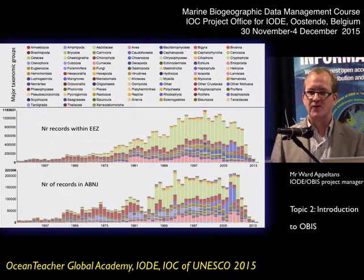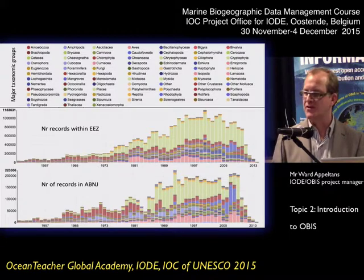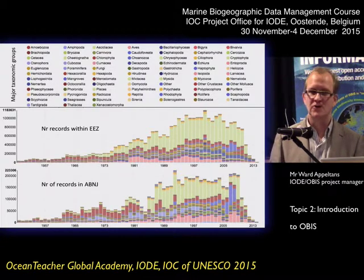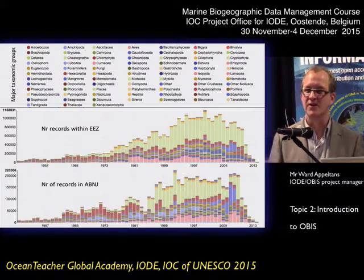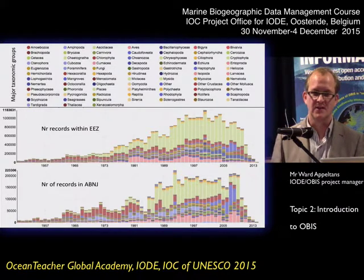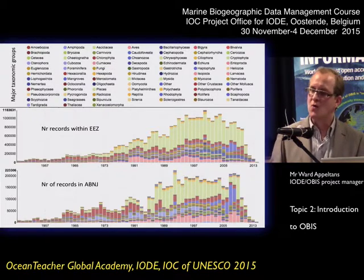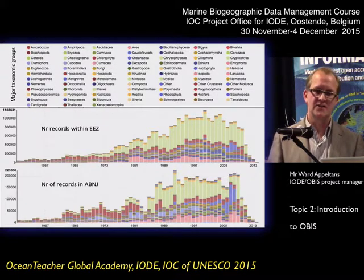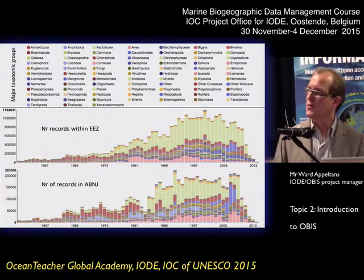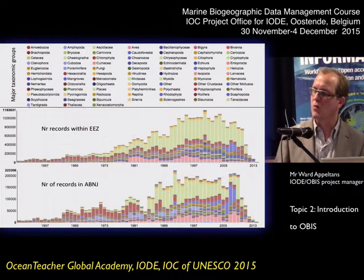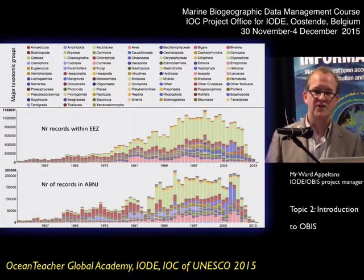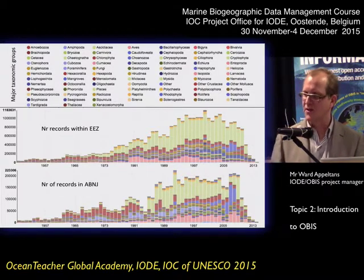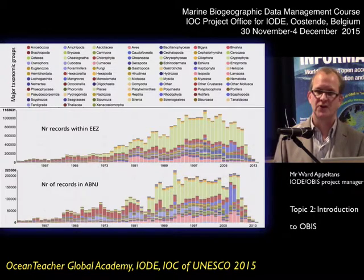The majority is fish — 50% of all the records are fish records. But of course you'll know that the phylogenetic diversity in the ocean is much higher than on land. Here you see an overview of all the major taxonomic groups. Within the exclusive economic zones — the EEZs — since 1990, we have about 1 million observations in OBIS. And in ABNJ — areas beyond national jurisdiction, or the high seas — we have about 200,000 records.